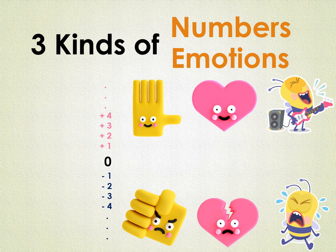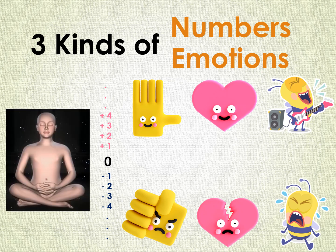Now comes the third kind of emotion. Which emotion do you think does number zero correspond to? You guessed it right — simply sitting silent, calm, and doing absolutely nothing is your zero emotion. This is how we start our Vedic Maths class every time.